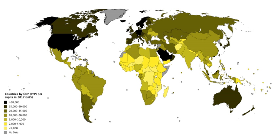Total factor income equals employee compensation plus corporate profits plus proprietors' income plus rental income plus net interest.